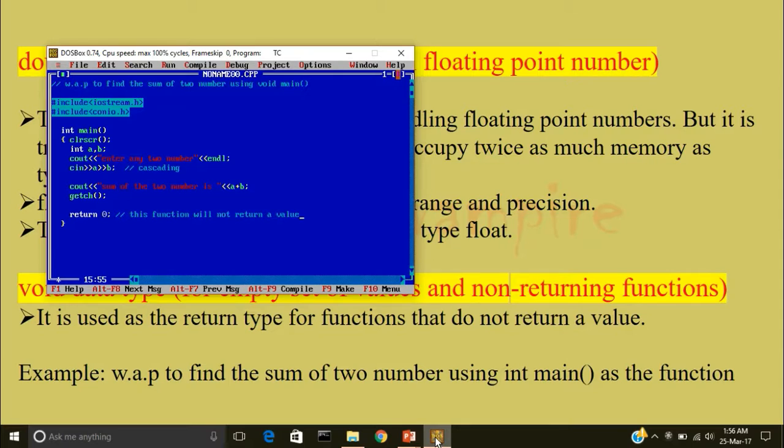But it is not necessary that this function will not return a value. Whenever we will write return 0, that means the function will not return a value. If like I will write return c,